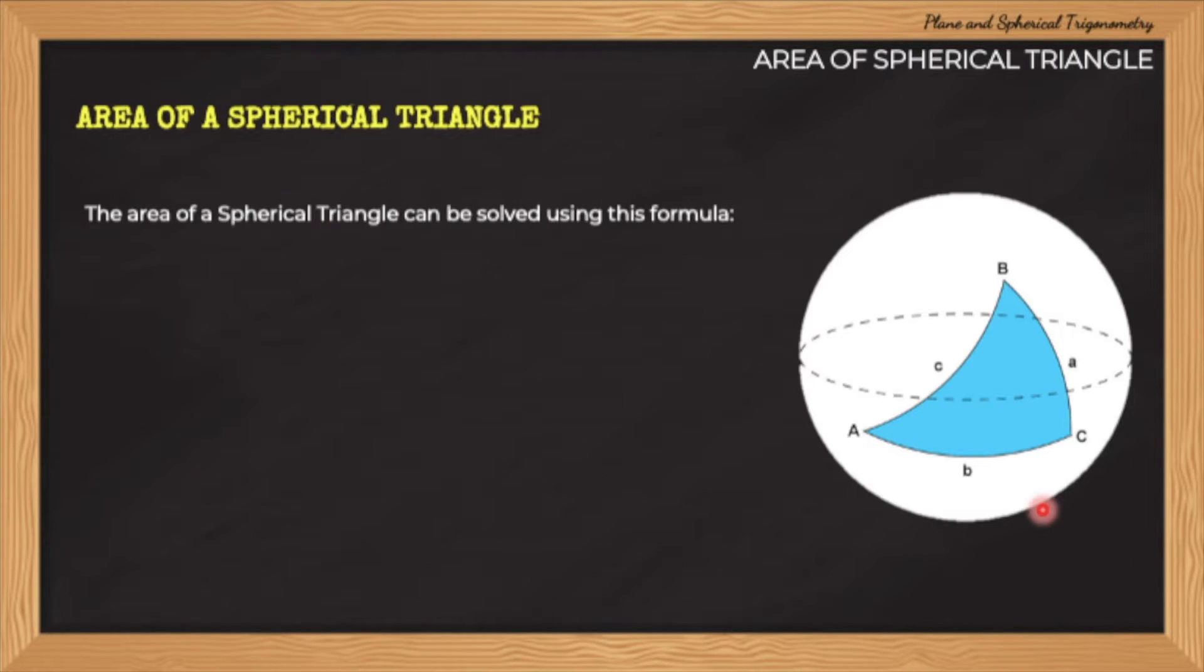The area of a spherical triangle can be calculated using the following formula. The area A equals pi R squared E divided by 180 degrees, where R is the radius of the sphere that is from the center of the sphere up to the surface.